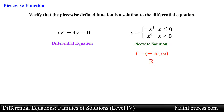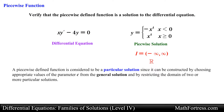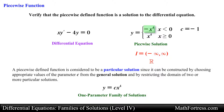In this example we are asked to verify if this piecewise defined function is a solution to the ODE. Keep in mind that a piecewise defined function is considered to be a particular solution since it can be constructed by choosing appropriate values of the parameter c from the general solution and restricting the domain. In this case we have negative x to the 4th when c equals negative 1 on the interval negative infinity to zero exclusive, and x to the 4th when c equals positive 1 from zero inclusive to positive infinity.